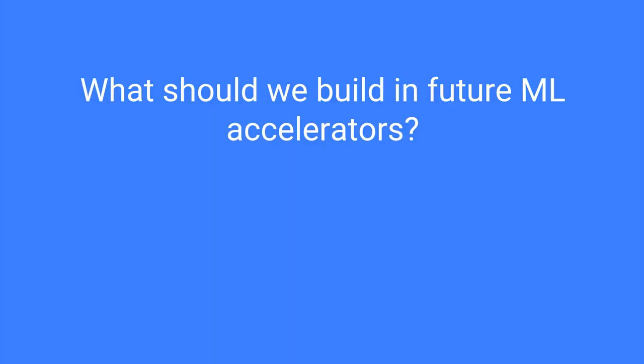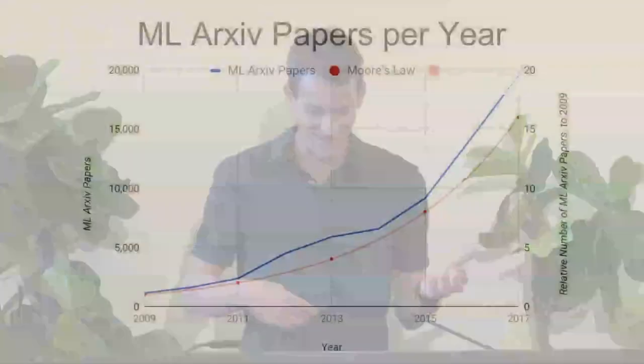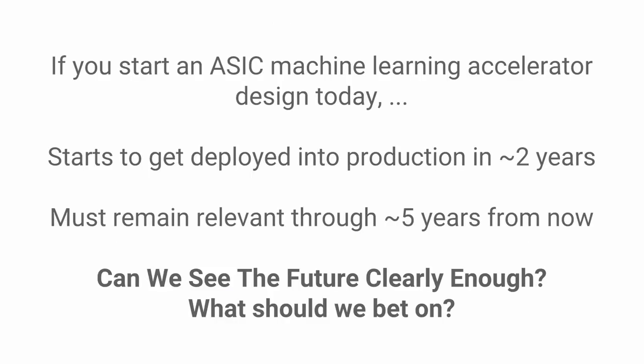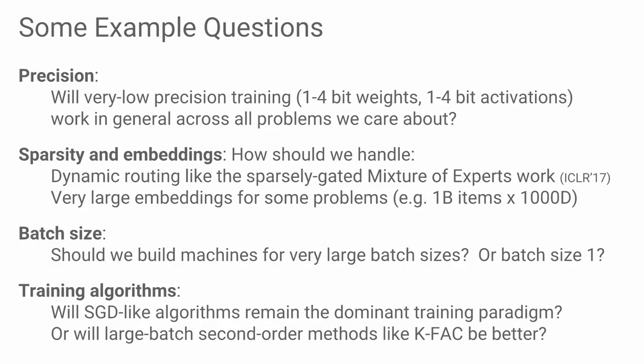One question Bill alluded to is the uncertainty in building machine learning hardware today that needs to run the algorithms of tomorrow—and we don't know what those are. The field is rapidly changing. If you plot the Moore's Law exponential we used to have in computer hardware, that's nothing compared to the arXiv paper growth rate. It's quite uncertain exactly what kinds of things we will want to run on these systems. If you start an ASIC today, it gets deployed two years from now if you go fast, and it has to remain relevant for a three-year lifetime—so we have to predict five years out.